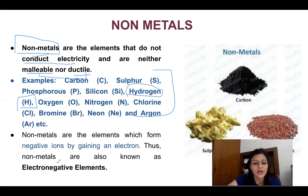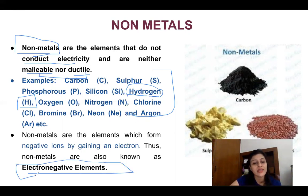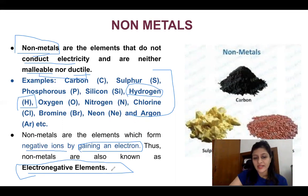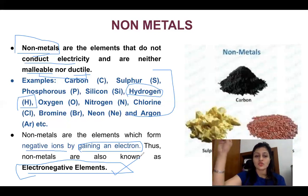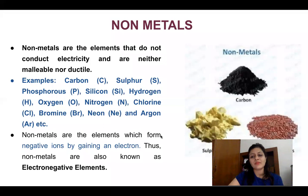We have talked about electropositive elements — that is metals. Metals lose electrons, so they become electropositive ions. Non-metals form negative ions by gaining electrons, which is why they are called electronegative elements. When someone gains electrons, they gain a negative charge — that is the electronegative element. When someone loses electrons, they become positively charged — that is the electropositive element. So metals are electropositive and non-metals are electronegative elements.